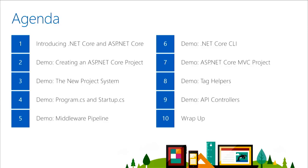Then we're going to jump into some demos. We're going to create a project using Visual Studio 2017, take a look at the new CSproj project system, and then look at the underpinnings of an ASP.NET Core application — program.cs, startup.cs — before we move on to the middleware pipeline, a little bit of .NET Core CLI, and then we'll create an MVC project. Time permitting, we'll look at a quick demo of tag helpers and API controllers.